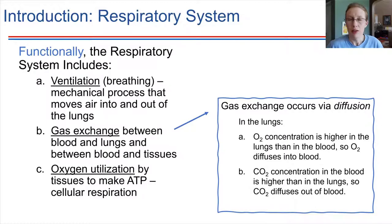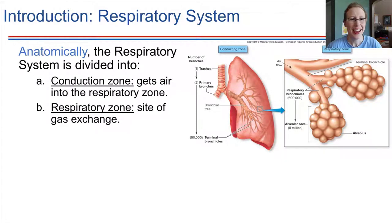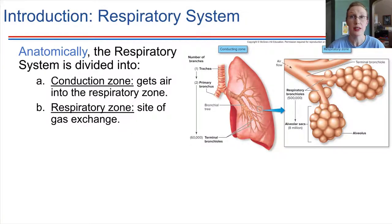Let's take a look at the respiratory system anatomically. We can divide the respiratory system up into a couple of different zones. One is called the conduction zone — this is the zone that is designed to move the air down to where gas exchange can take place. We also have what's called the respiratory zone, which is also part of the respiratory system, but that's the site where actual gas exchange takes place, and that's down at the very bottom.